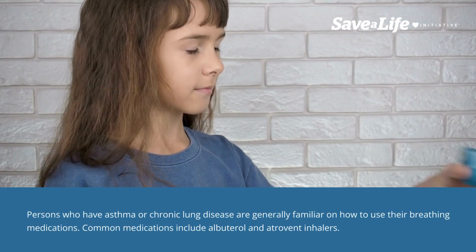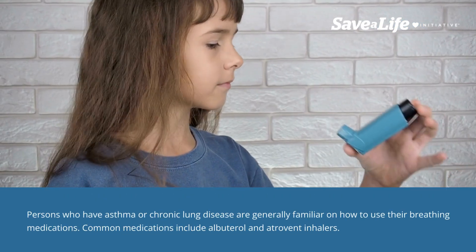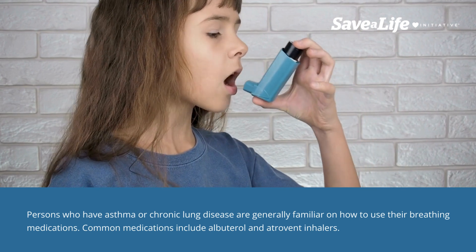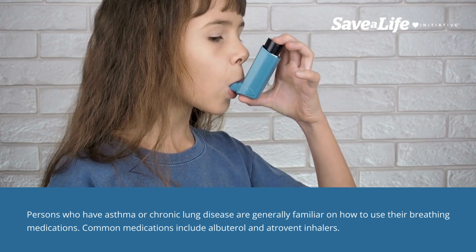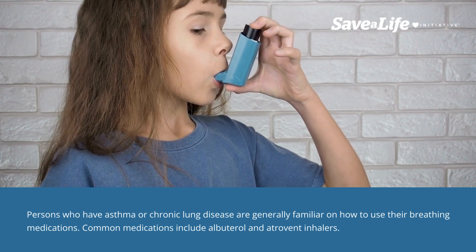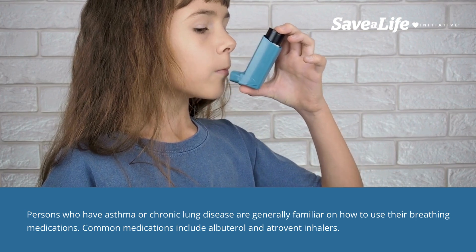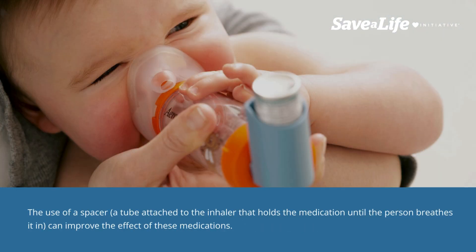Persons who have asthma or chronic lung disease are generally familiar with how to use their breathing medications. Common medications include albuterol and atrovent inhalers. The use of a spacer — a tube attached to the inhaler that holds the medication until the person breathes it in — can improve the effect of these medications.